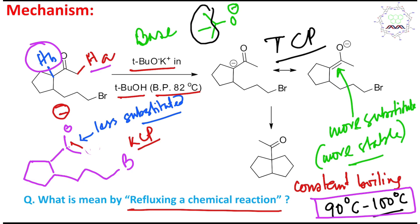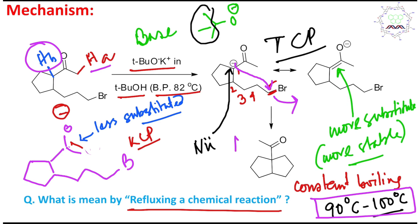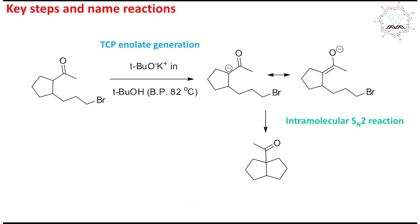Under refluxing conditions, this thermodynamic enolate is generated. The enolate's nucleophilicity is expressed from the carbon center, because the carbon center is softer in nature. Therefore, this nucleophile will attack the carbon-bromine bond, enabling ring formation. Counting the atoms: 1, 2, 3, 4, 5 — a five-membered ring formation is possible via an intramolecular SN2-type reaction.